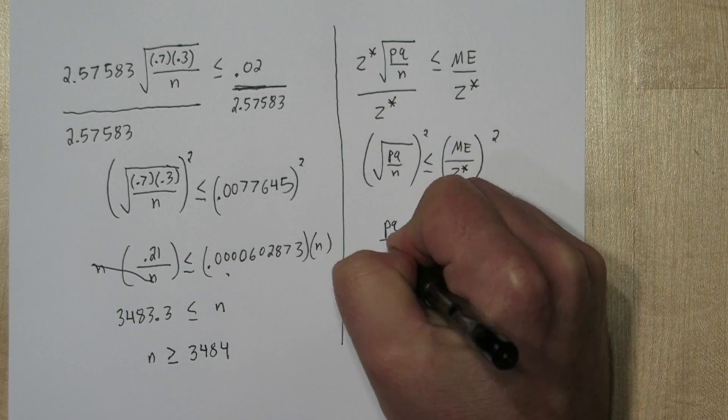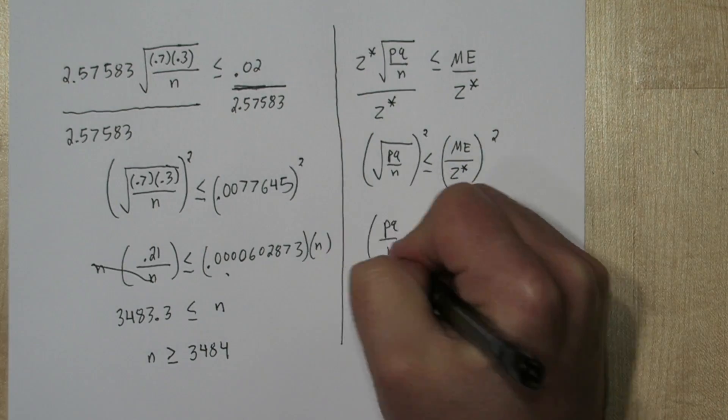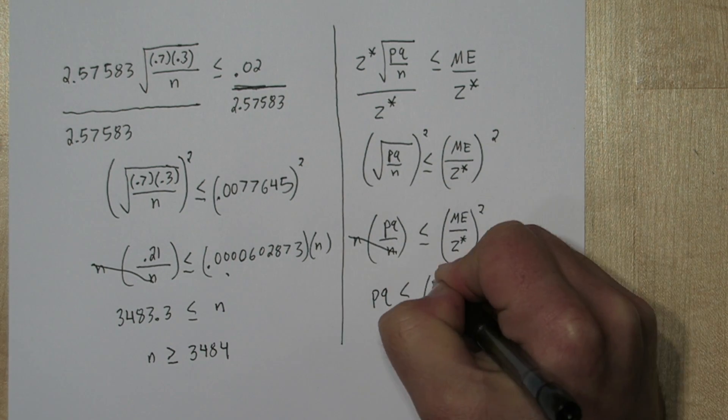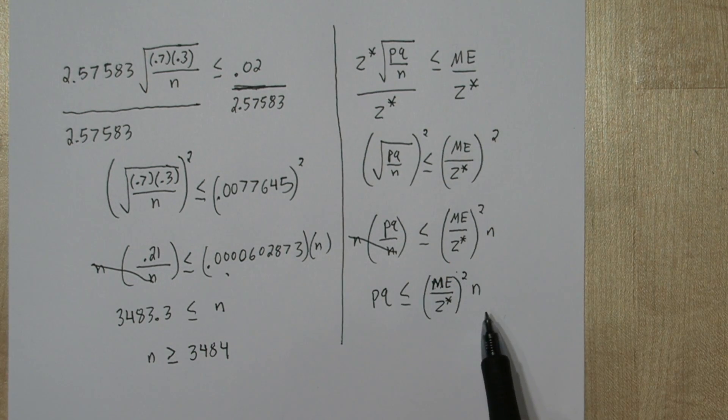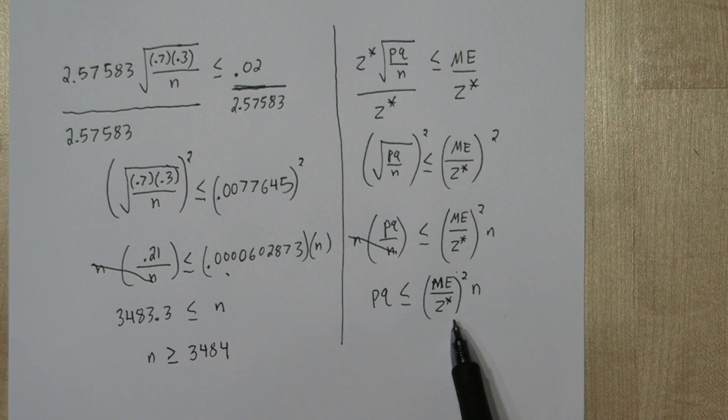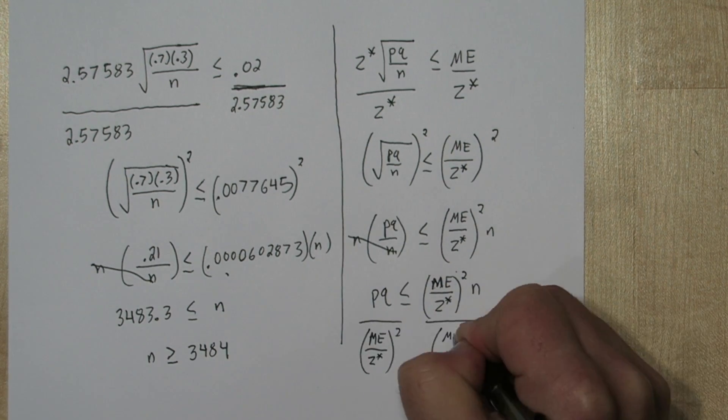Now to get rid of the square root sign, we'll square both sides. Now we'll multiply both sides by n. And to solve for n, we'll divide both sides by the quantity Me divided by z star squared.